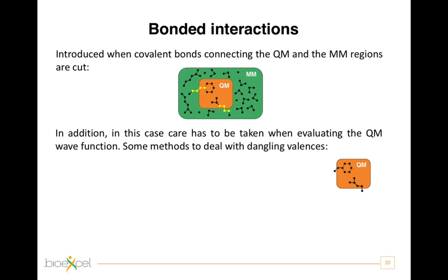Moreover, in this case, care has to be taken when evaluating the quantum wave function, that is when solving the Schrödinger equation for the quantum part. In fact, a straightforward cut through the QM/MM boundary would create one or more unpaired electrons in the quantum subsystem. In reality, these electrons are paired in bonding orbitals with electrons belonging to the atoms on the MM side. However, now those electrons do not exist in the MM region, due to our artificial partitioning and the lower level of resolution we decided to use in that region.